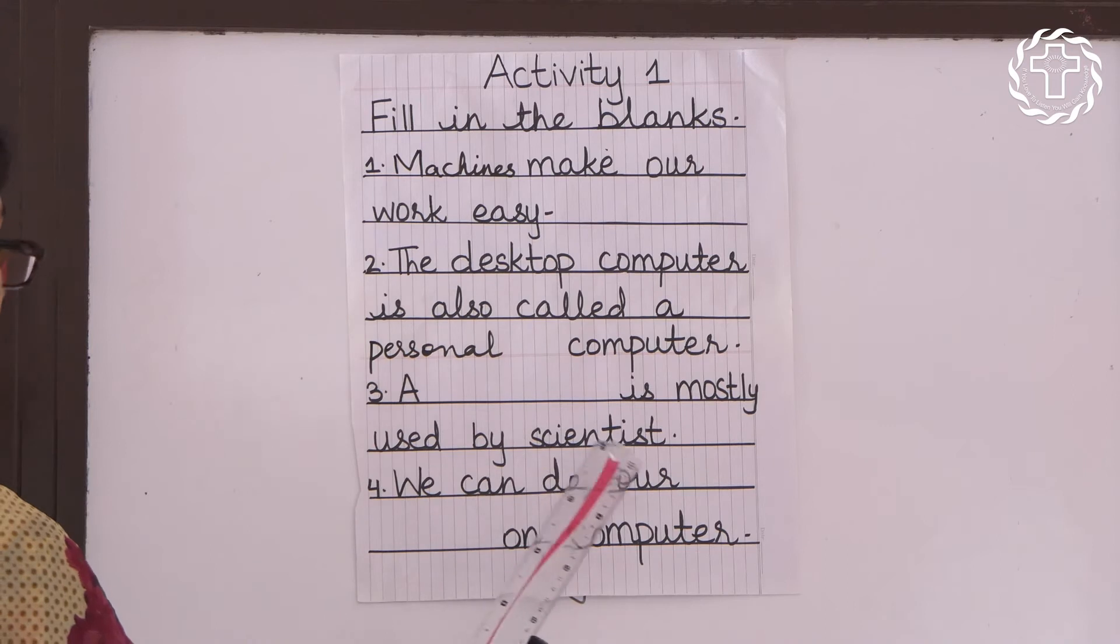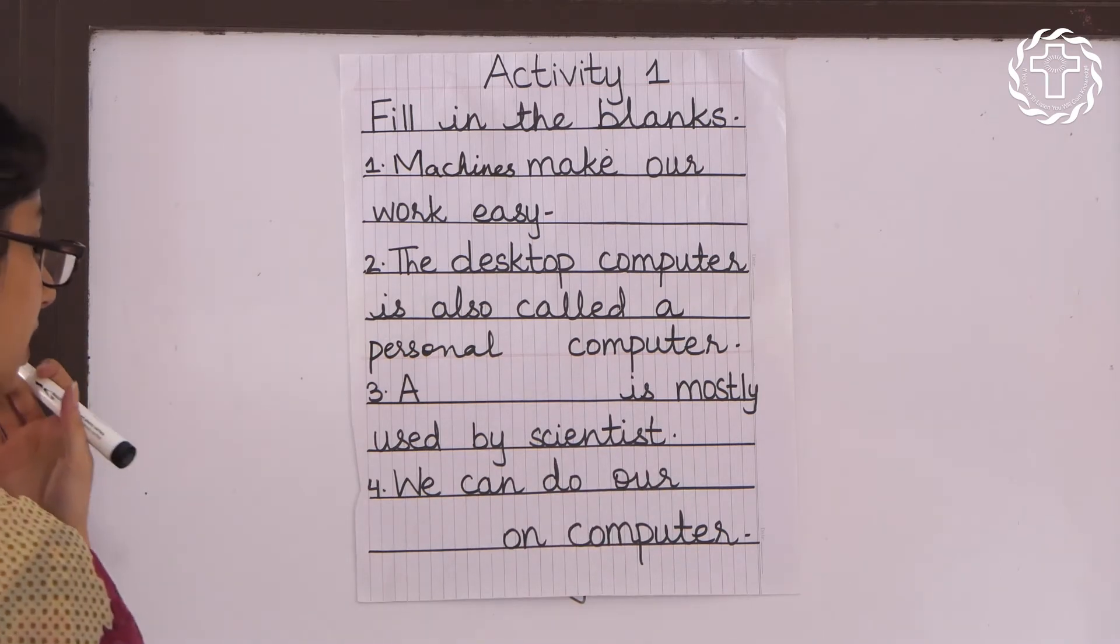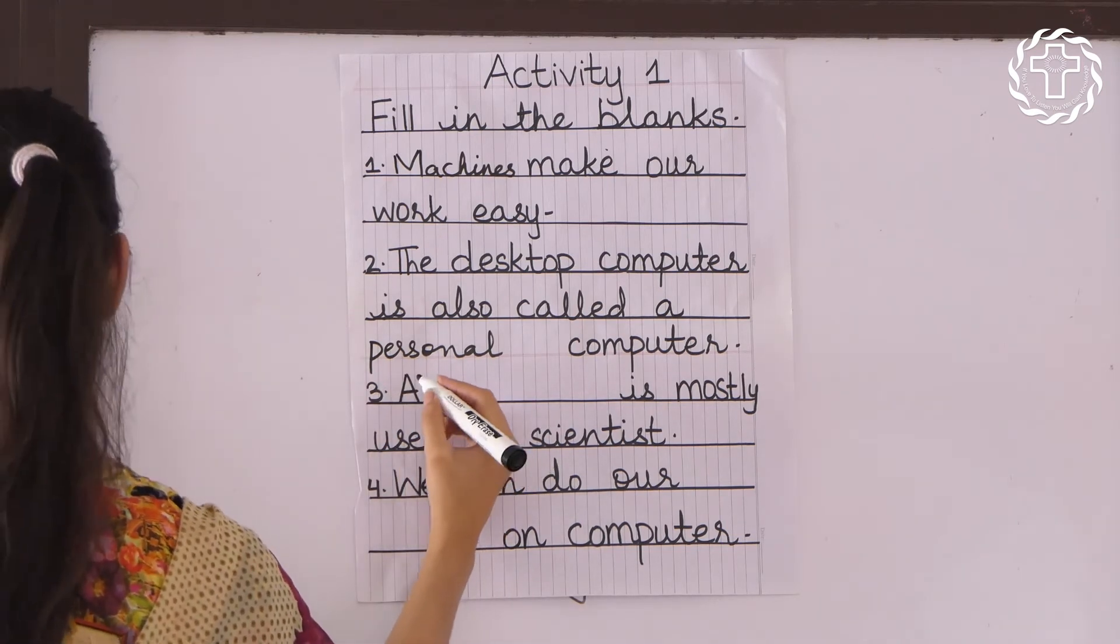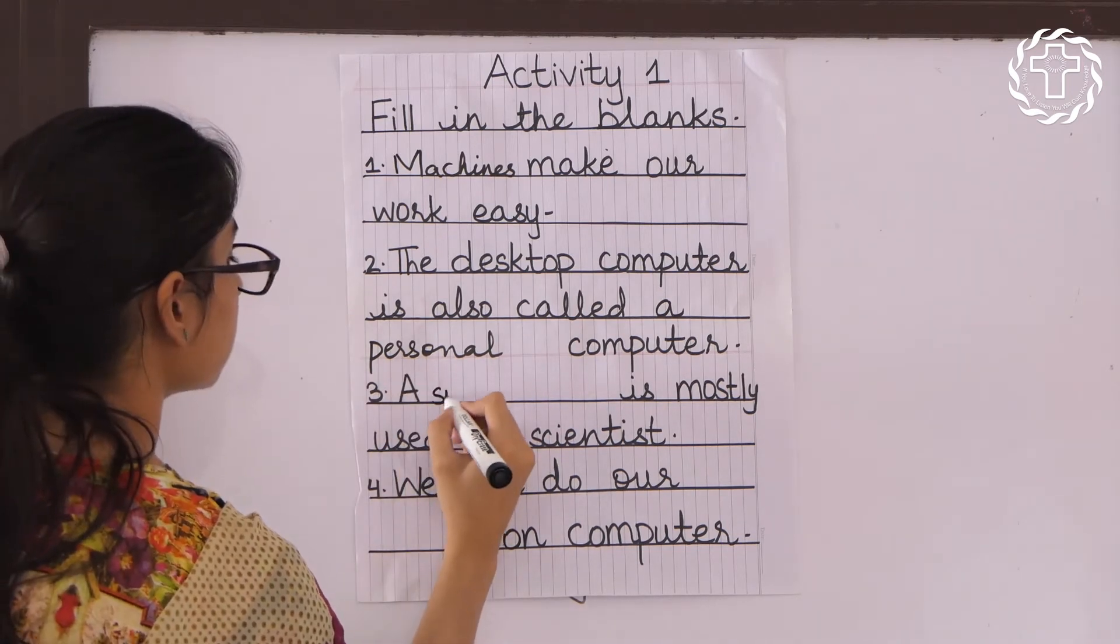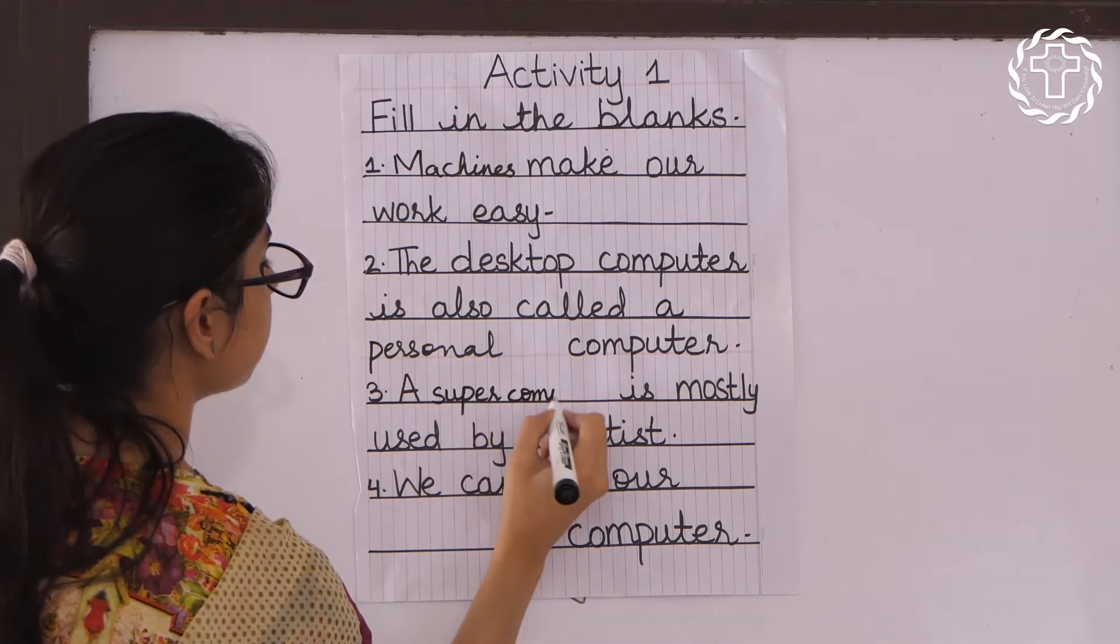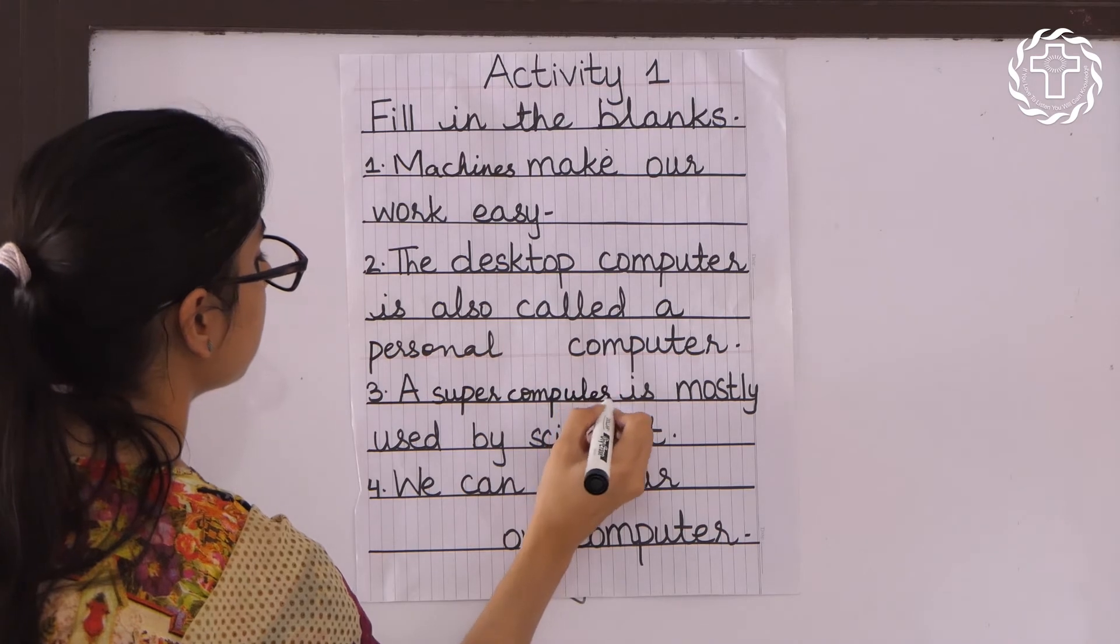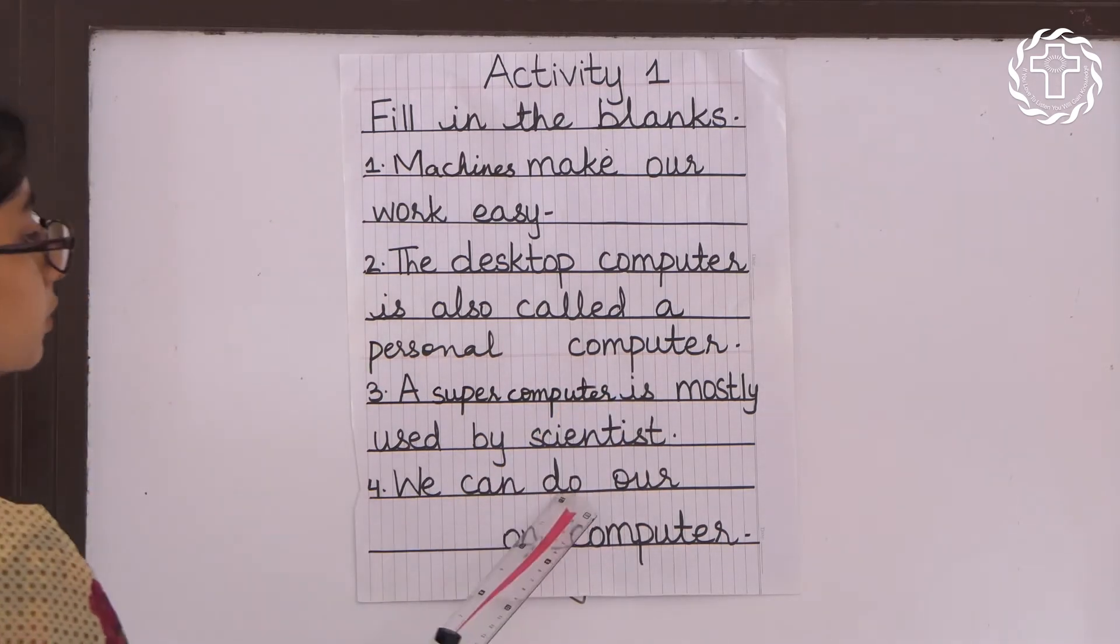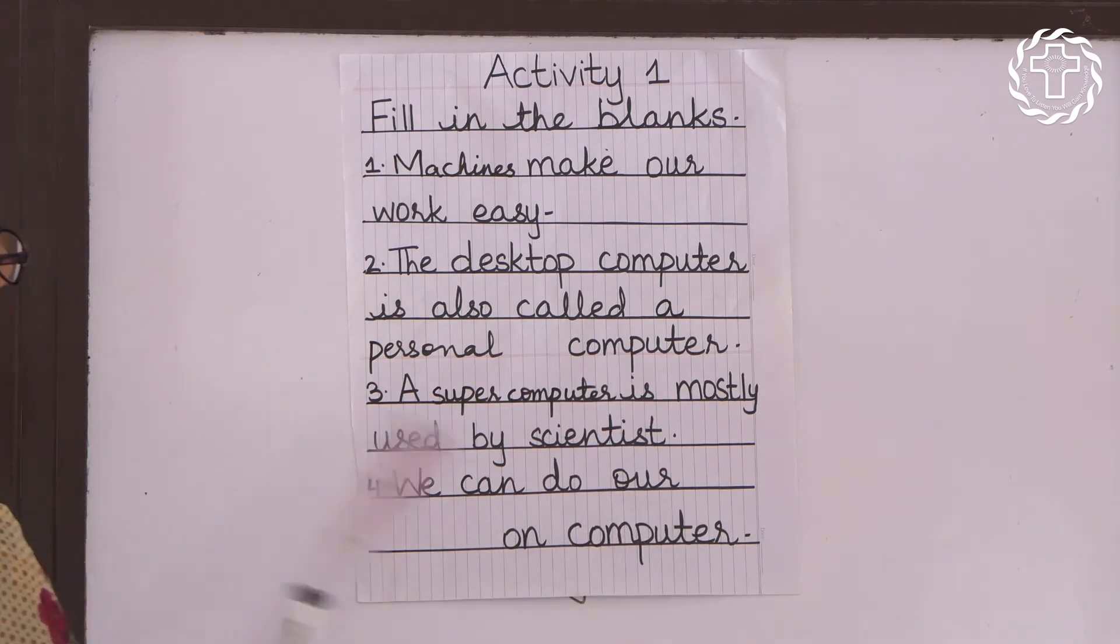Number three: blank is mostly used by scientists. Answer: super computer. Number four: we can do blank on computer. Answer: art. Write these in your home book.